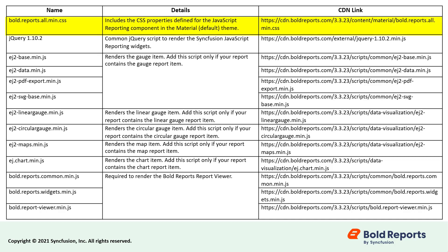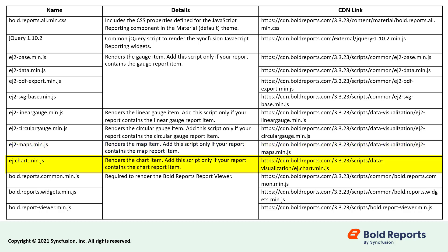bold.reports.all.min.css includes the CSS properties for the JavaScript reporting component. The jQuery 1.10.2 script is used to render the Syncfusion JavaScript reporting widgets. EJ2Base.min.js, EJ2Data.min.js, EJ2PDFExport.min.js, and EJ2SVGBase.min.js are used to render the gauge item. EJ2CircularGauge.min.js renders the circular gauge report item. EJ2Maps.min.js is used to render the map report item. EJ.chart.min.js renders the chart report item. bold.reports.common.min.js, bold.reports.widgets.min.js, and bold.reportviewer.min.js are required to render the Bold Reports report viewer.